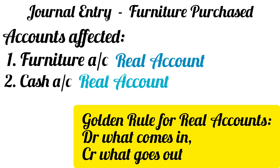The golden rule for real accounts is: debit what comes in, credit what goes out. When you purchase furniture for cash, furniture comes into the business, so furniture account will be debited. The cash goes out of the business, so cash account will be credited, since the golden rule for real accounts says credit what goes out.